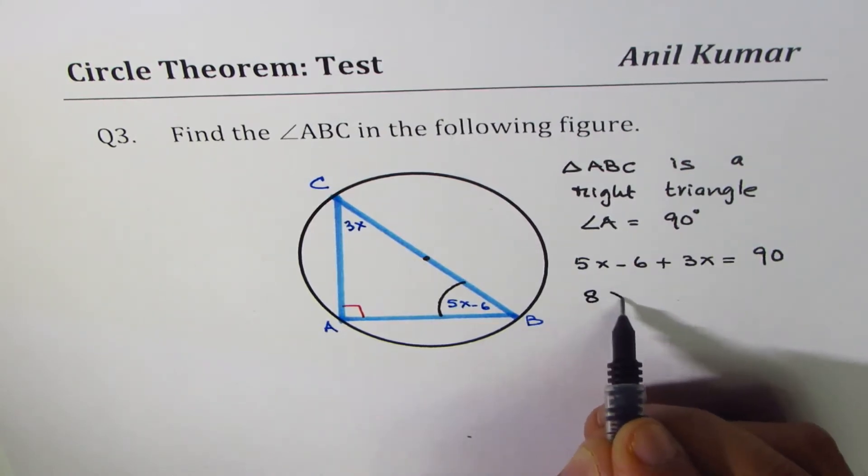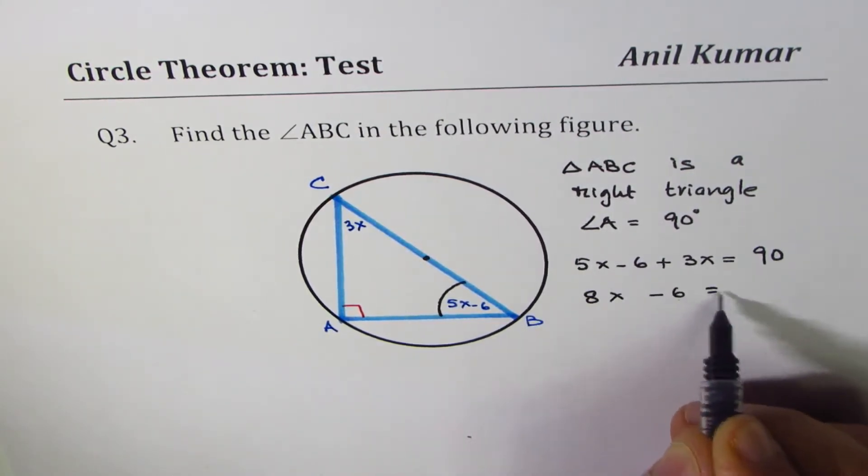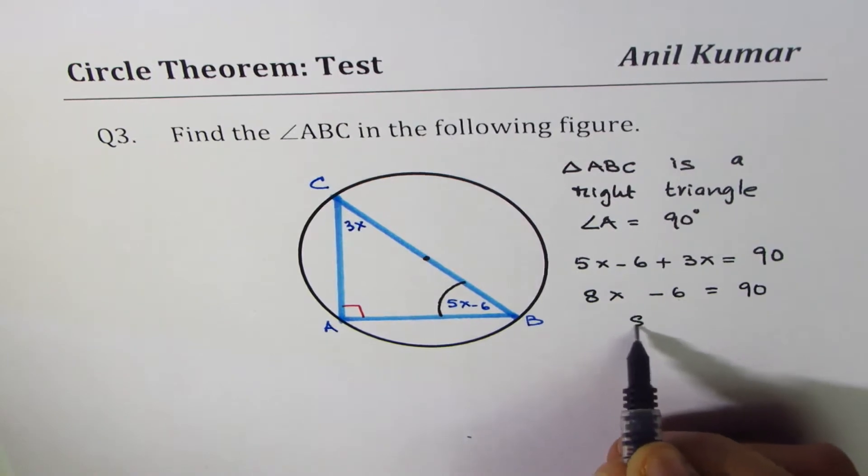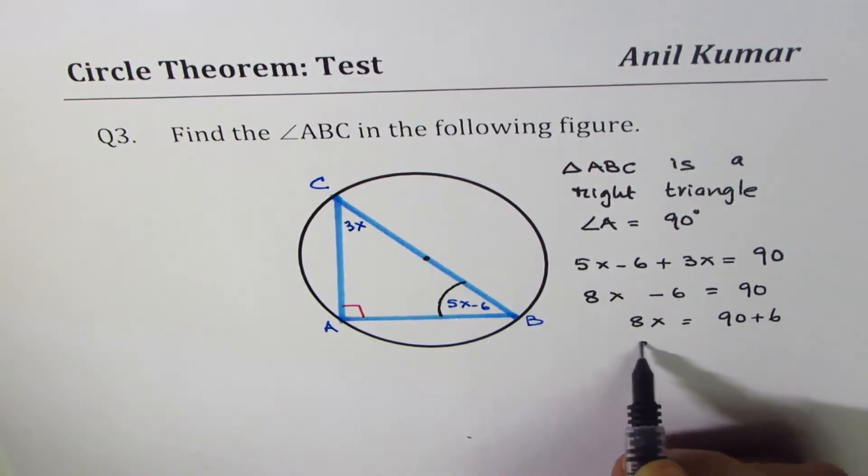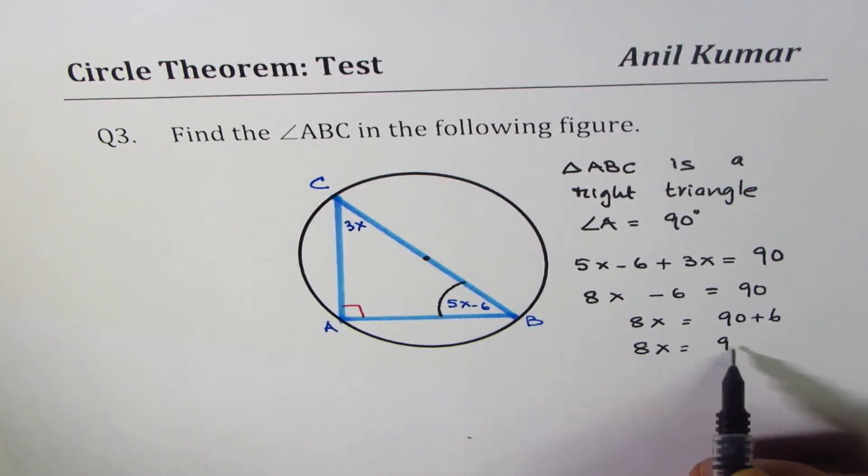Combining the terms we get 8x minus 6 equals 90. 8x equals 90 plus 6. So 8x is 96. x is 96 divided by 8.